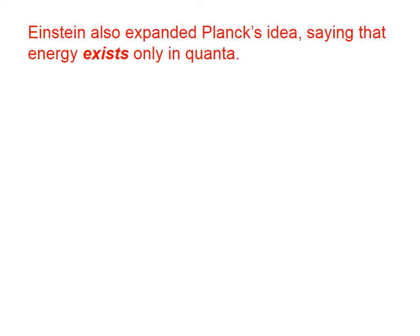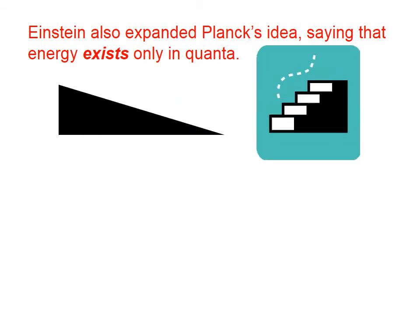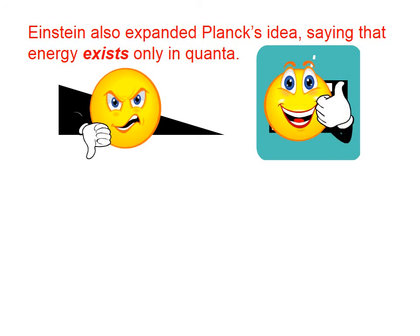Einstein also expanded Planck's idea, saying that energy exists only in quanta. Planck had said that energy is absorbed or emitted in chunks, but he didn't say that energy only exists in discrete chunks. Einstein expanded that idea, saying energy only exists in quanta — energy cannot take any allowable value. The values of energy are not a continuum; they are chunked in discrete amounts.